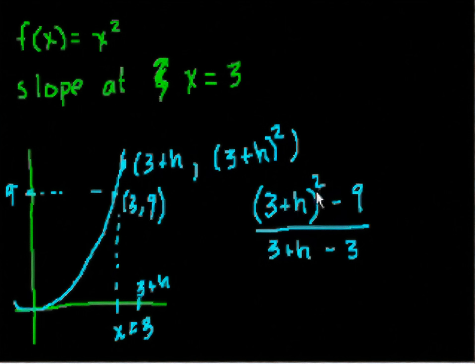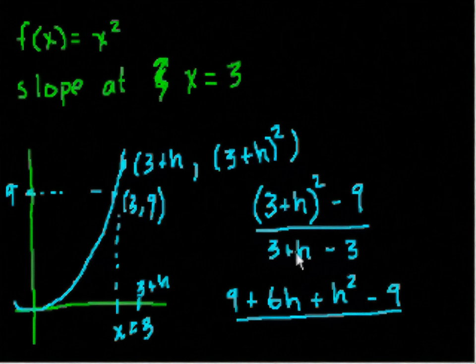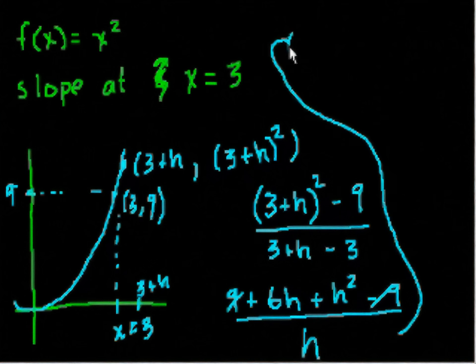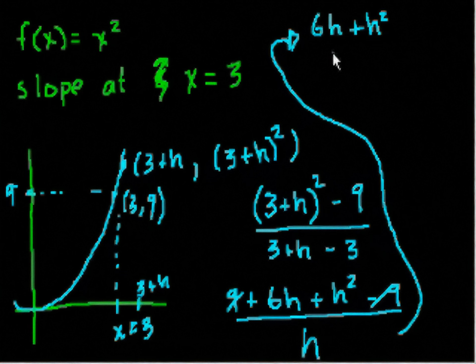So if we simplify this top part, or if we multiply it out, what's 3 plus h squared? That's 9 plus 6h, plus h squared. And then you get the minus 9. And all of that is over, well this 3 and this minus 3 cancel out, so all you're left is with h. And even if we simplify this, this 9 minus 9, they cancel out. So let me go up here. So what we're left with is 6h plus h squared over h.